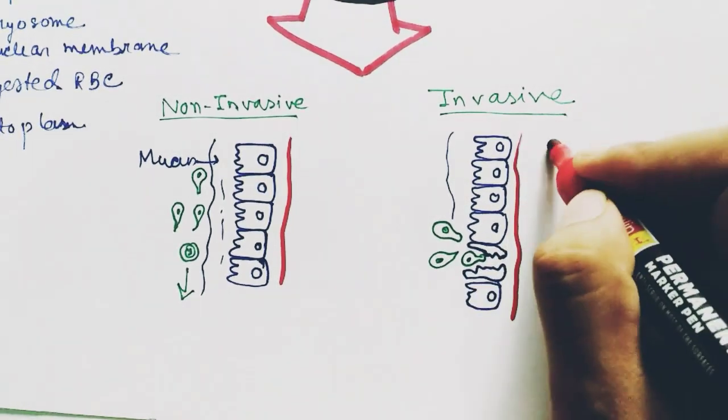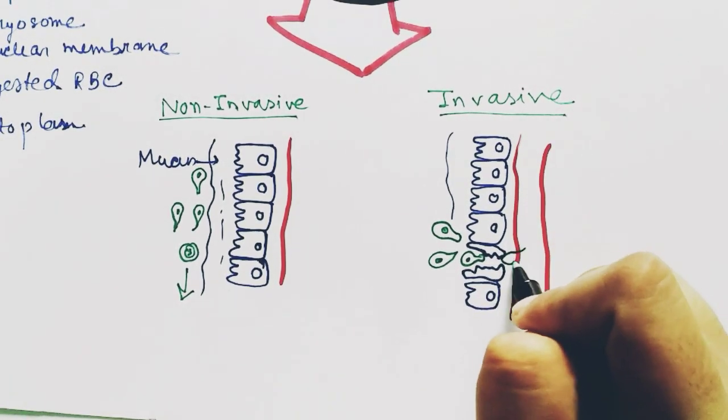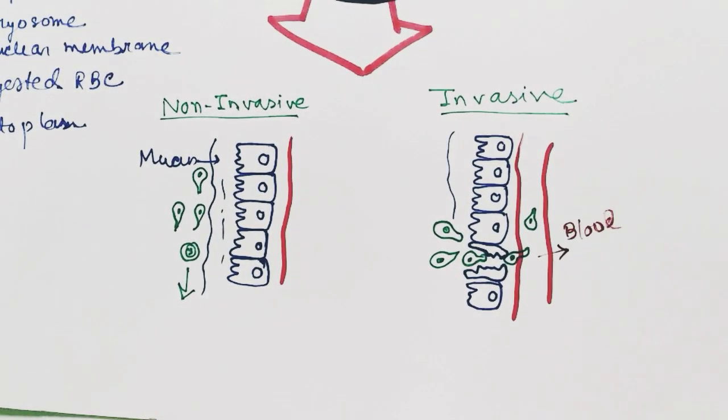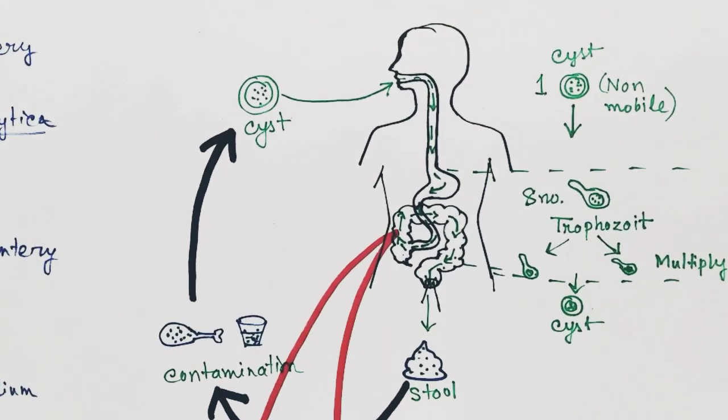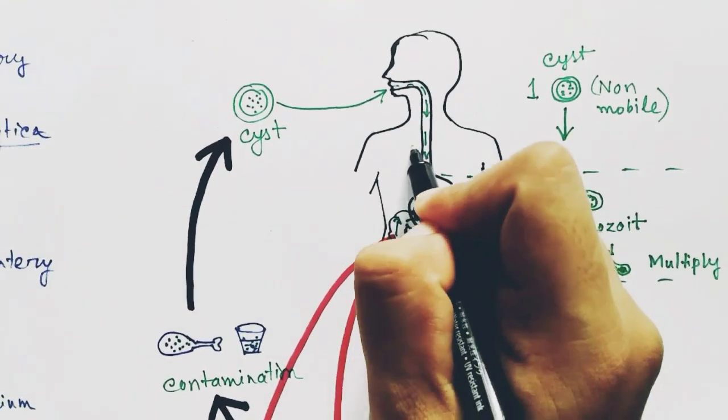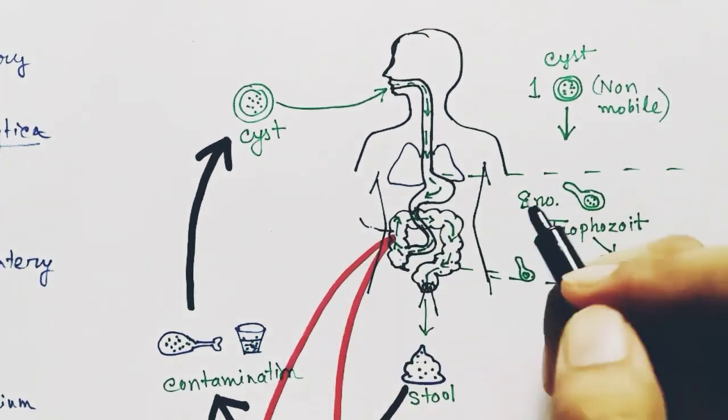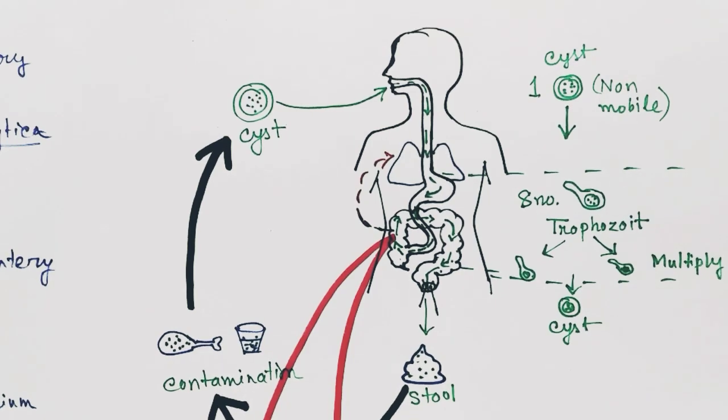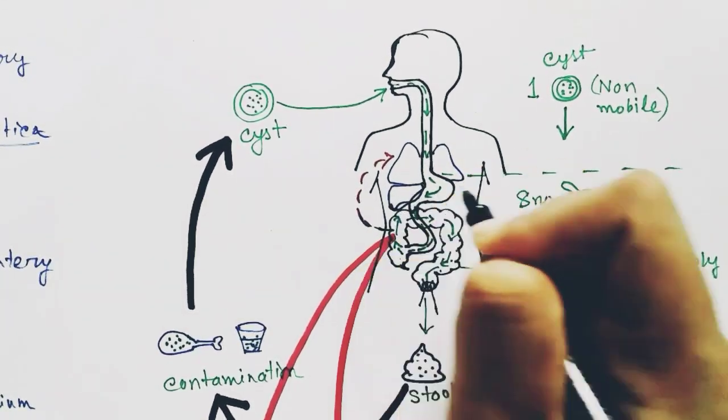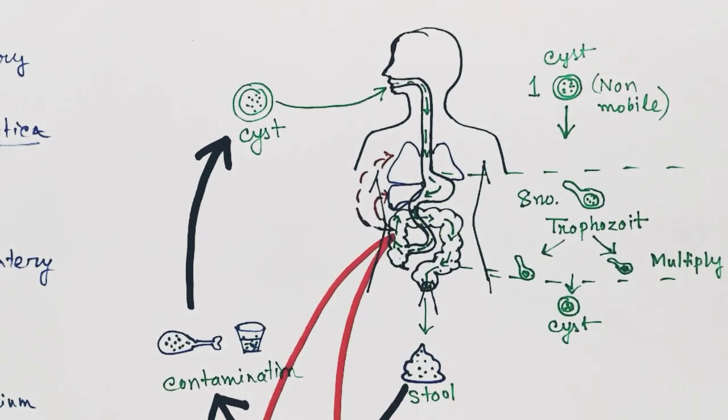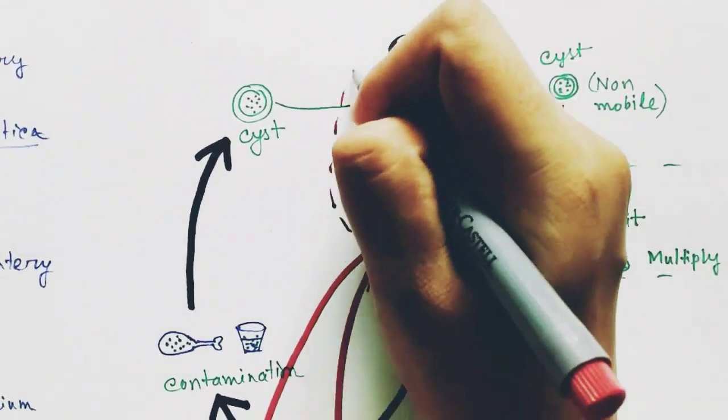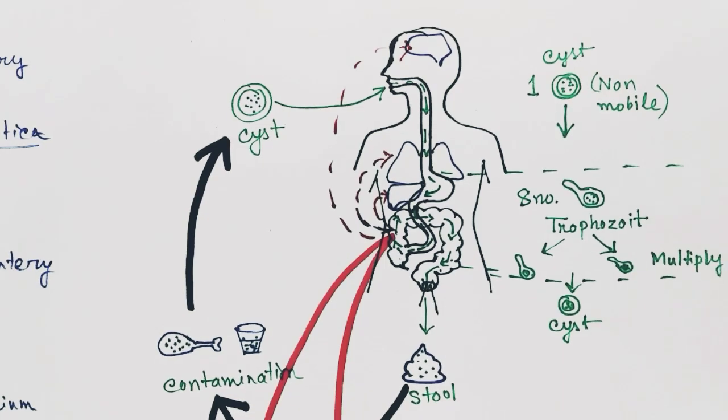Now trophozoites are inside our bloodstream. When the trophozoites make their way into our bloodstream, they affect many of our internal organs. They can affect our lungs, liver, or even our brain. So the invasive form of this infection is quite dangerous.